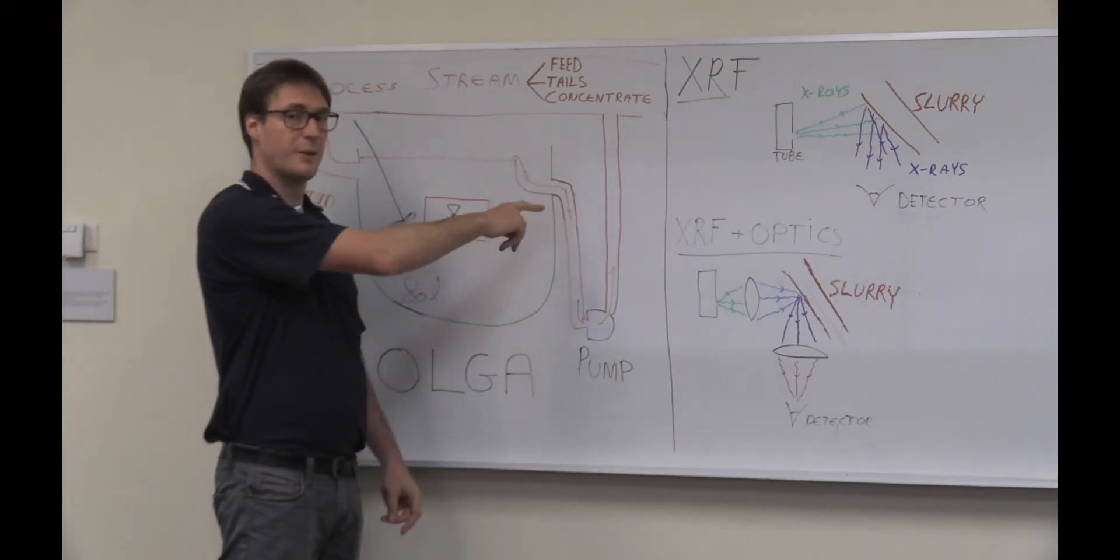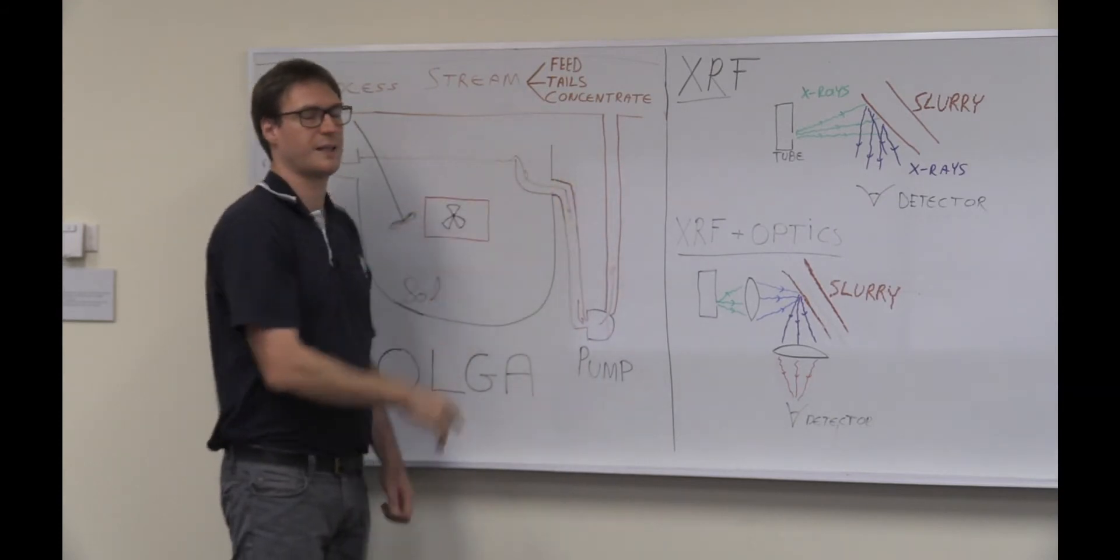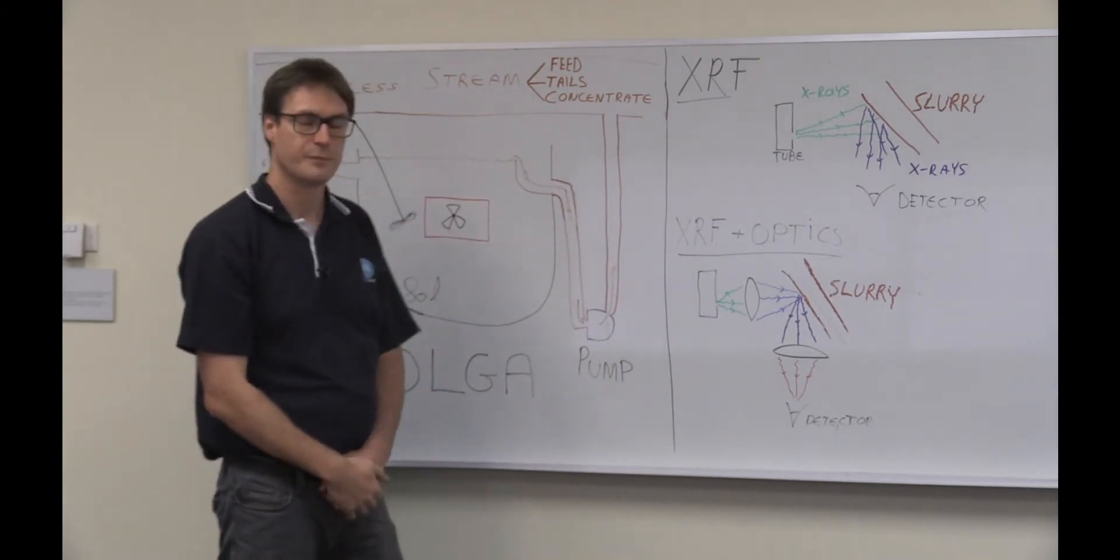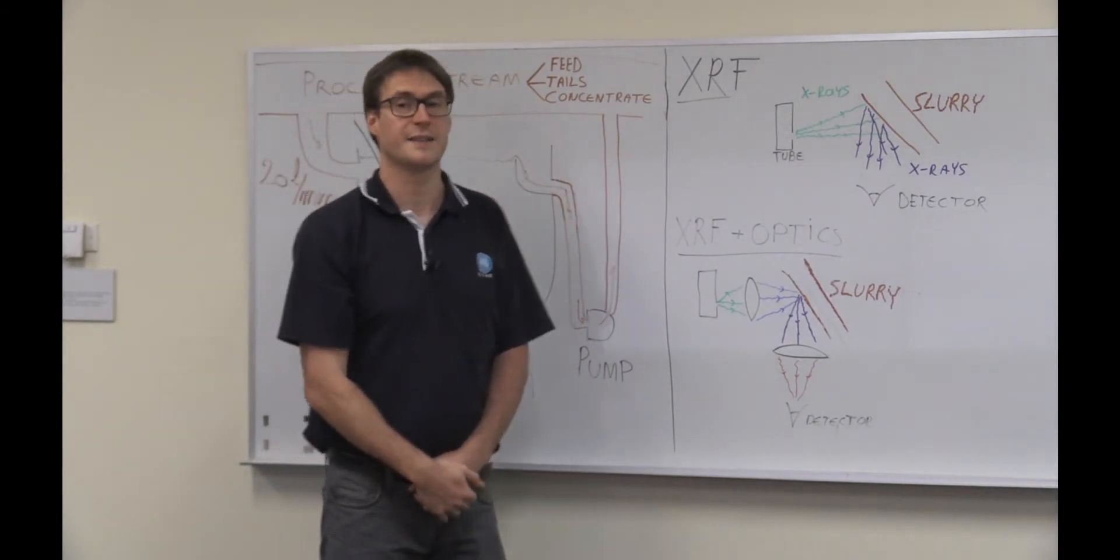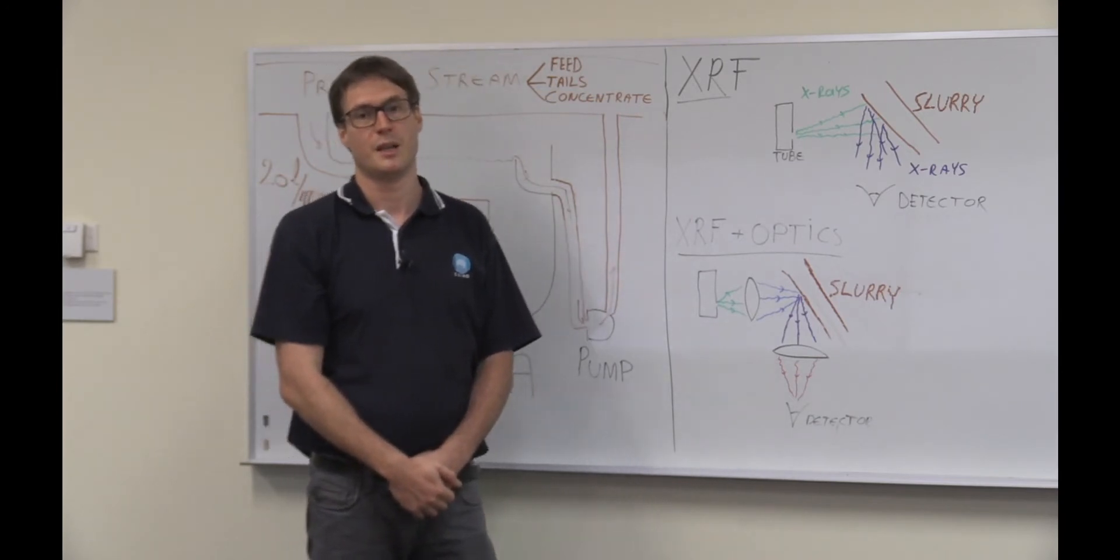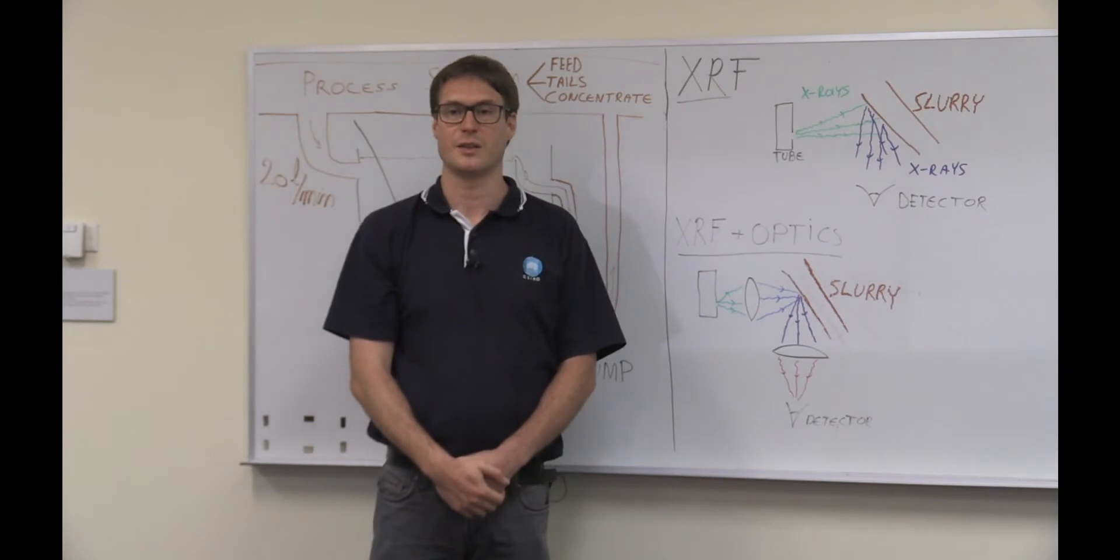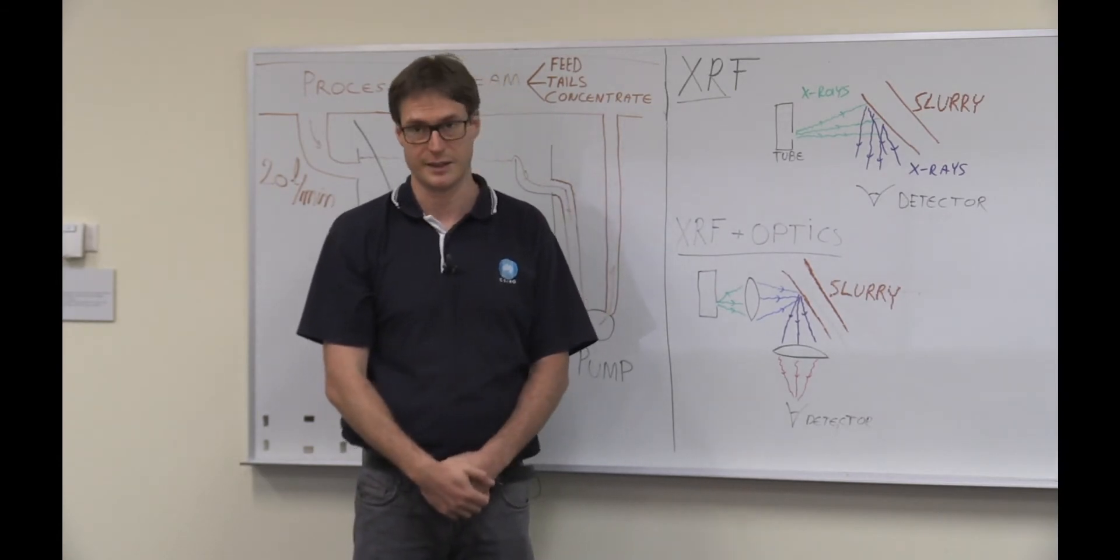On this side of the tank we have an overflow where the slurry leaves the tank and is being pumped back to the main process stream. Now a plant that has access to this online data of gold concentration can do online process control by, for example, looking at sudden increases in gold concentration in the tailings and act on it.